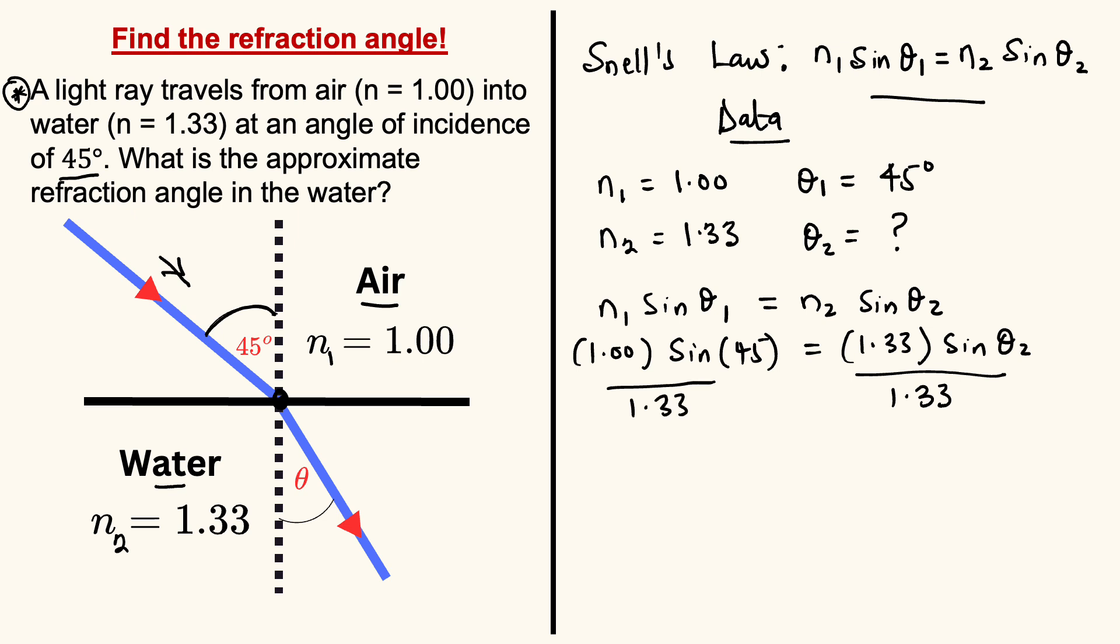That cancels out. We are left with sine of theta2 equals 1.00 times sine of 45 divided by 1.33. We can simplify this, so sine of 45 is about 0.707 divided by 1.33. If we do 0.707 divided by 1.33,